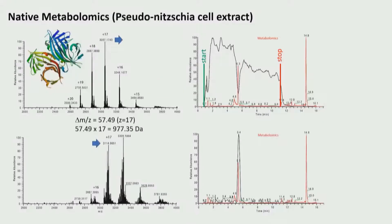Then we see there is a correlating peak in this particular window. Because we know the mass difference between the intact protein peaks — in this case 977 Da — and the small molecule is 244 Daltons, that roughly fits to the mass difference times four.